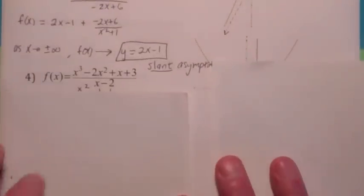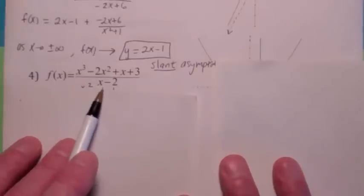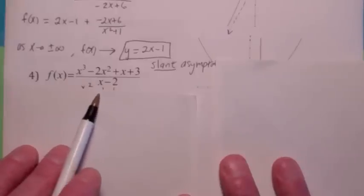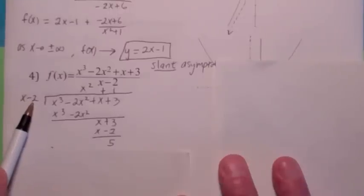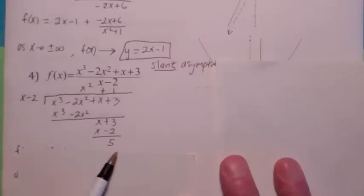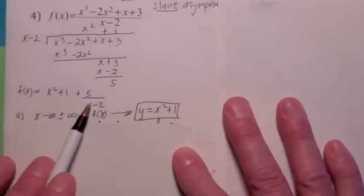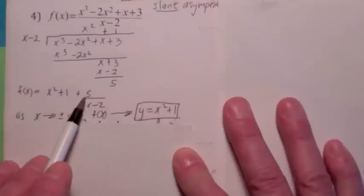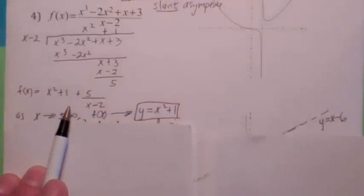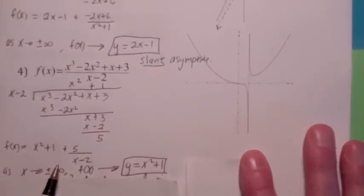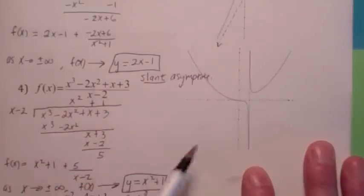Now the top has degree 3 and the bottom has degree 1, so you're going to have a quadratic asymptote. How do you find it? Use long division again — divide by x minus 2. Here you could use synthetic division. The remainder is 5, so when you use long division you get the function equals x squared plus 1 plus 5 over x minus 2. As x goes to plus or minus infinity, the remainder term 5 over x minus 2 goes to 0. So the end behavior is y equals x squared plus 1 — the graph is getting close to that quadratic function.